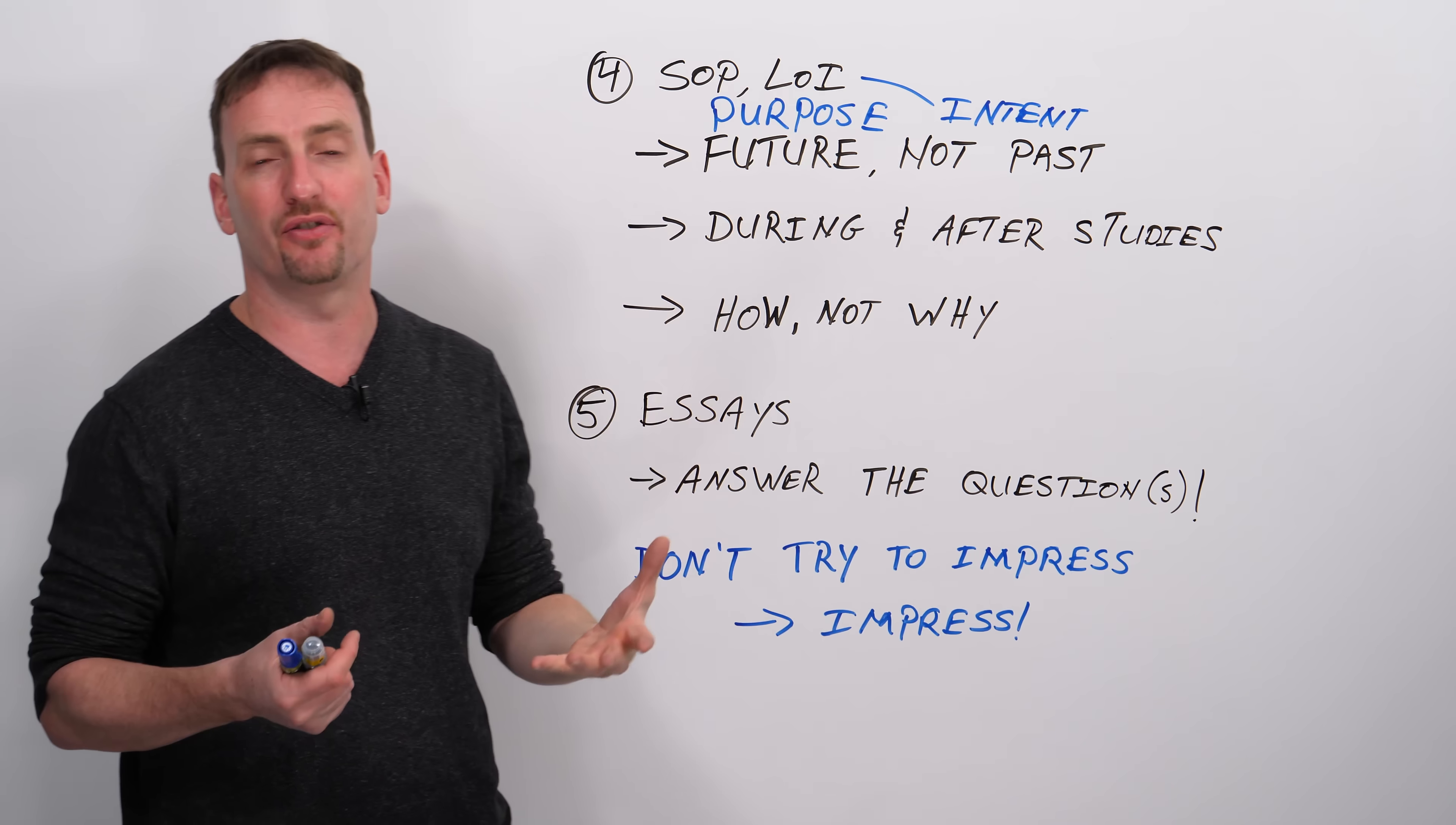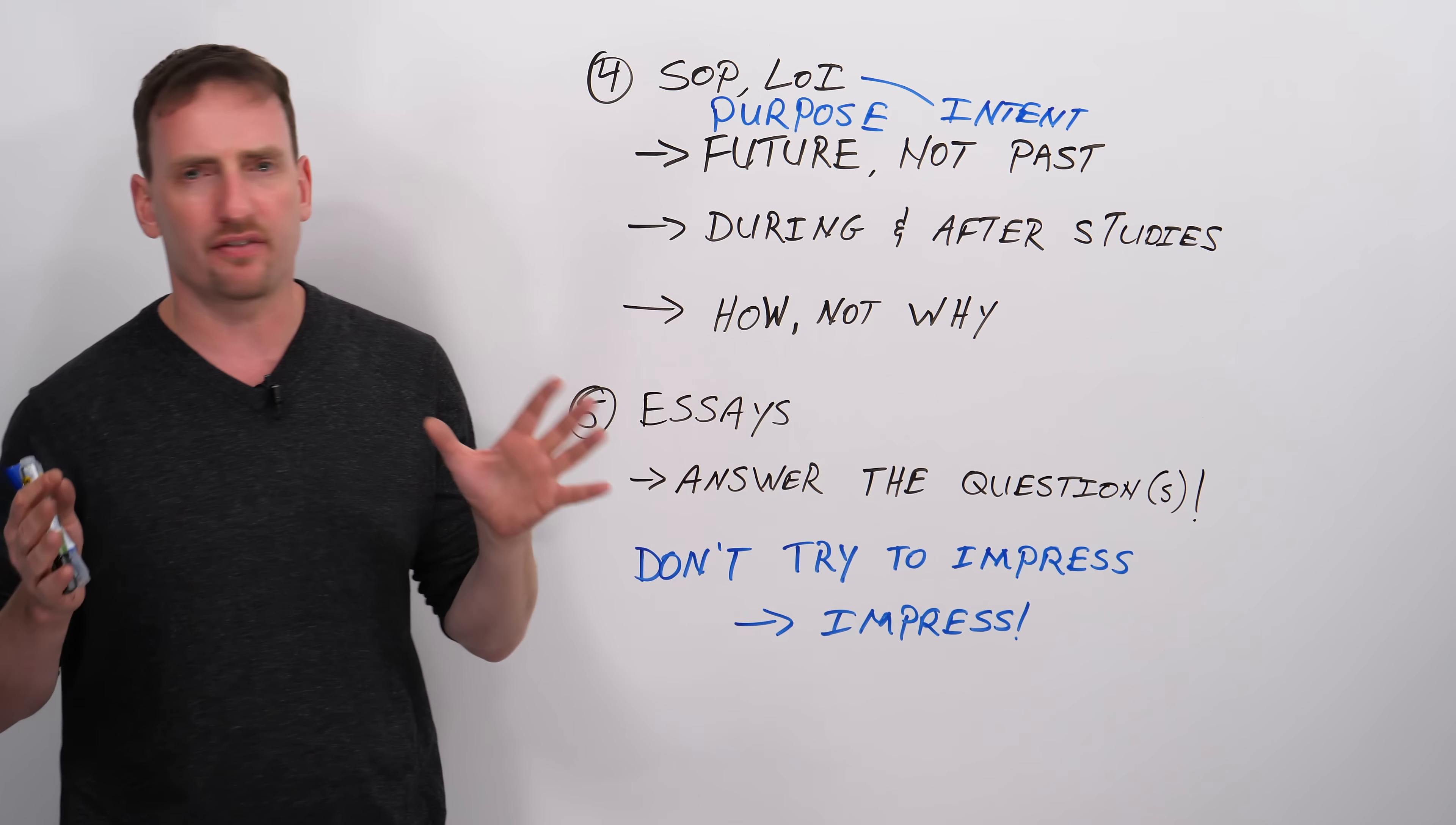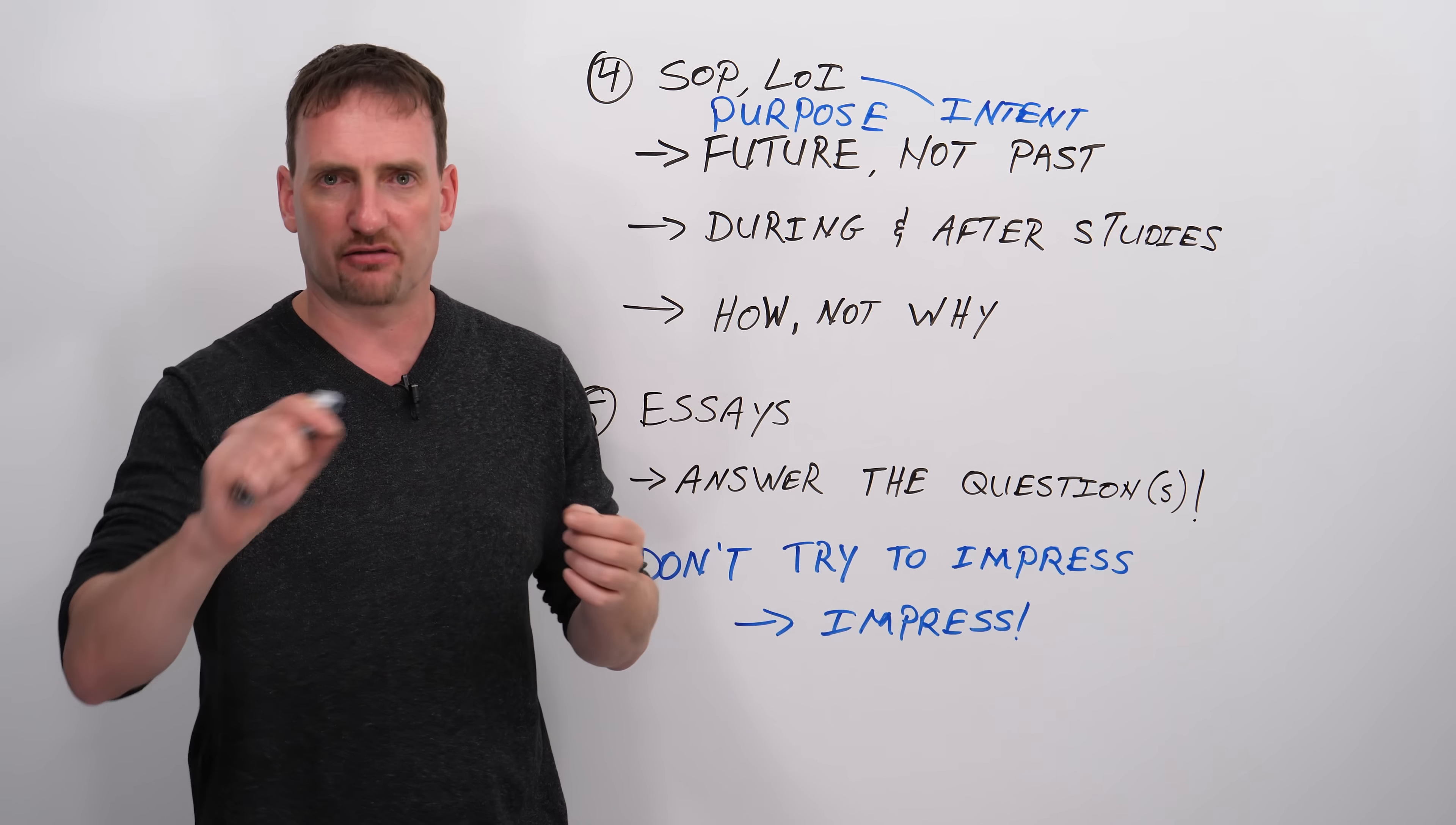And don't tell me why you want to accomplish this. This is part of the background. You can say, oh, I grew up watching my grandfather build all kinds of machines. That's why I want to be an engineer. Great. Two, three sentences, you're done. How are you going to be an engineer? How are you going to contribute to the university? How are you going to graduate? How are you going to make your dream come true? How are you going to attain your purpose? That's what you need to focus on.